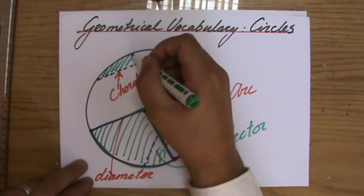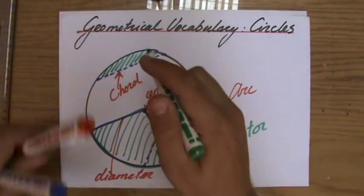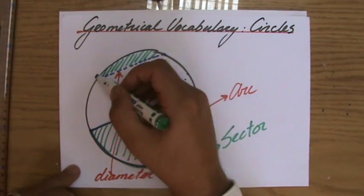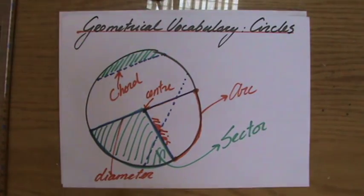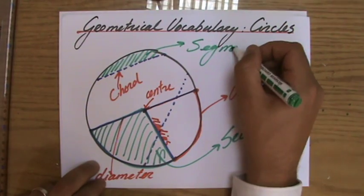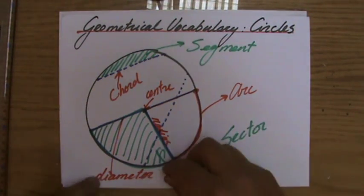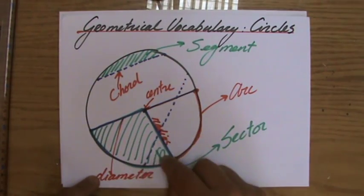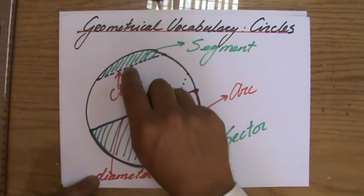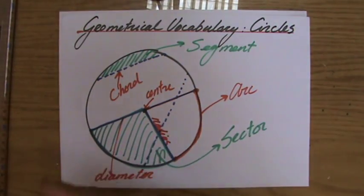One last word you need to be familiar with, the area of this part. So that is not enclosed by two radii, it's just enclosed by a chord and the circumference. We call that a segment of the circle. So that is different than a sector. Arc is a length, sector is an area, segment is an area, but it doesn't have two radii to enclose it and the circumference, it's just a chord.